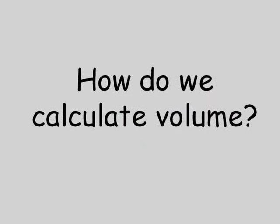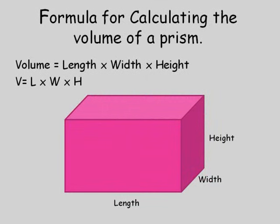So, how do we calculate volume? To calculate volume, we need to use a formula. The formula for calculating the volume of a prism is length times width times height. We can also write it V equals L times W times H. So, let's have a go at using the formula.